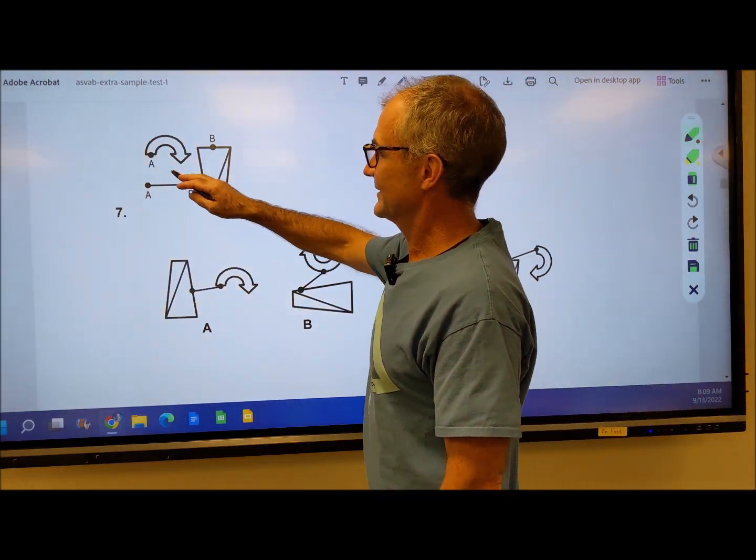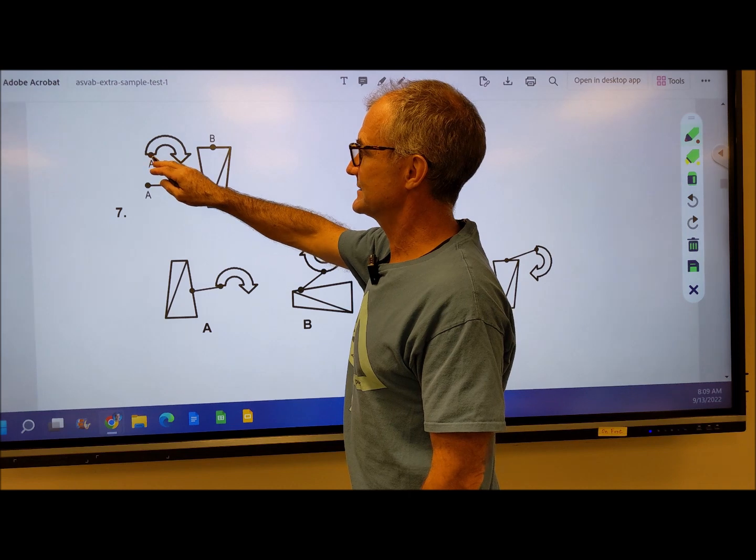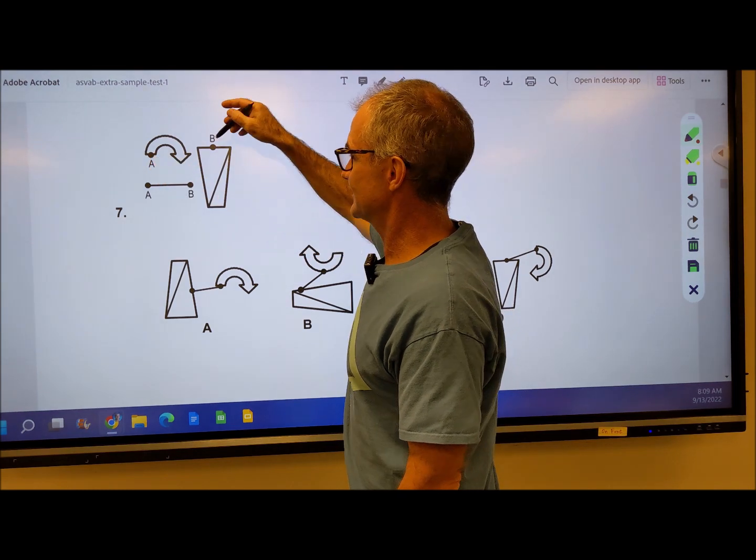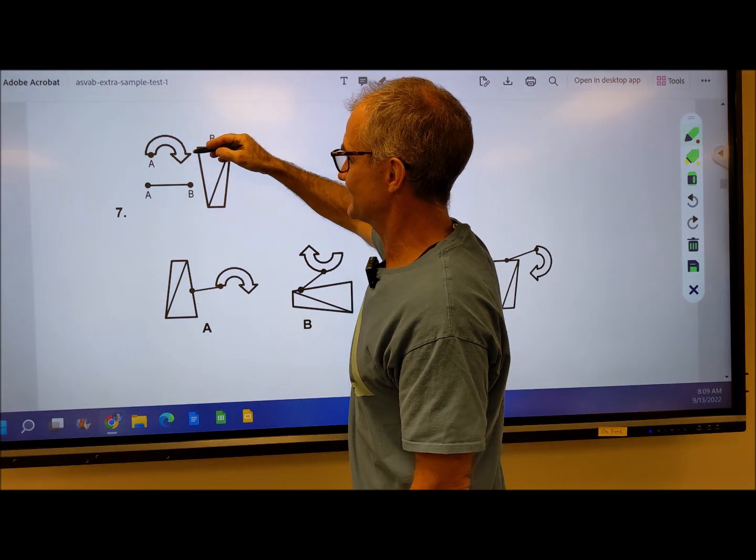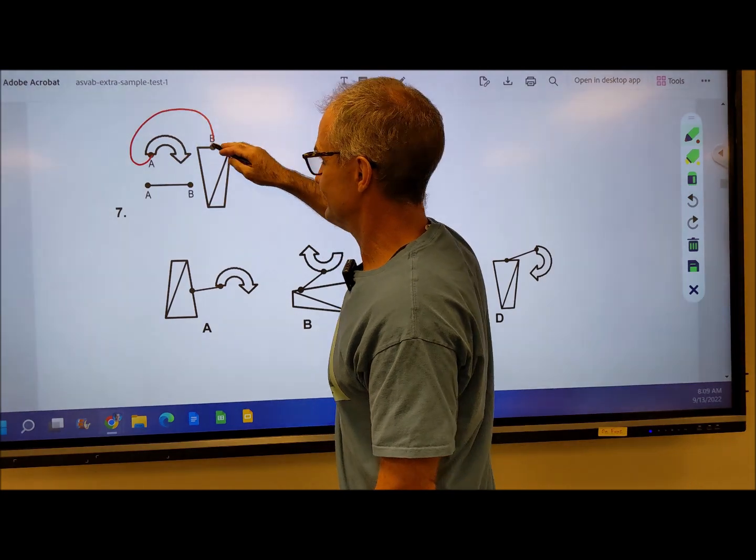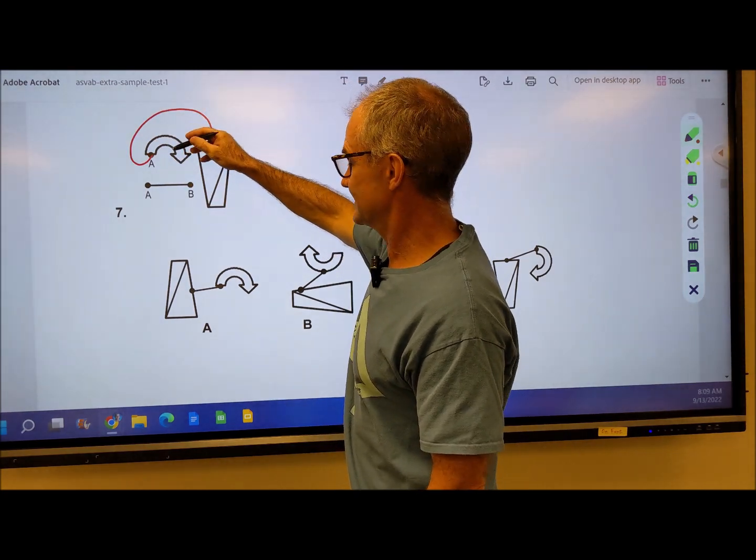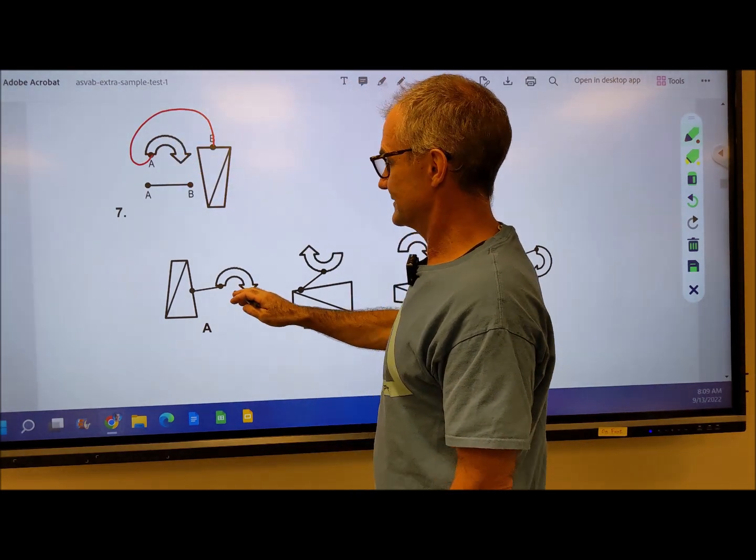Number seven: we have an arrow. The A point is at the start of the arrow, and the B is on the long side of the trapezoid. I'm connecting them there to there. Let's take a look at the back end of the arrow. That one would work, this one would not, this one would not, this one would.